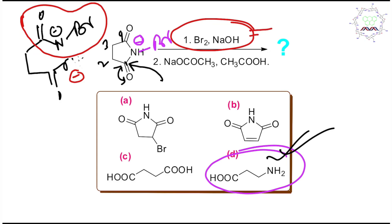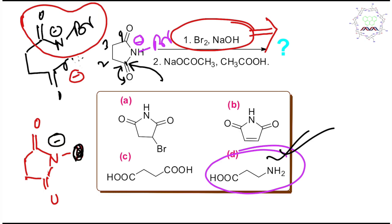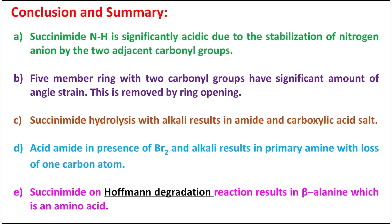You only need to recognize bromine and alkali as Hofmann degradation conditions. You might wonder — earlier I showed one mechanism, now I'm showing another. Both are actually valid. When we see succinamide, the acid-base reaction comes first: the proton is abstracted to give N⁻, then bromine — being electrophilic — adds. Going exactly this way, you can also get the right answer.